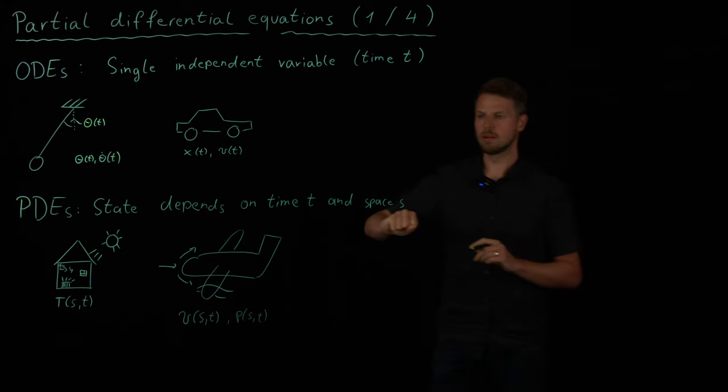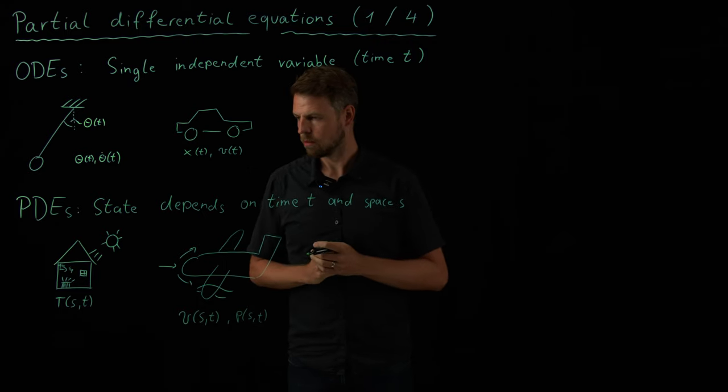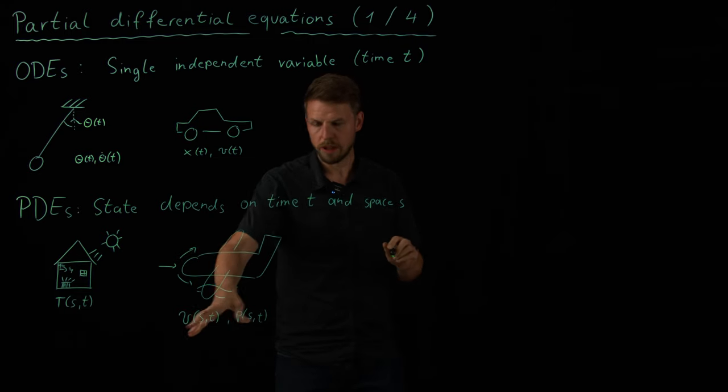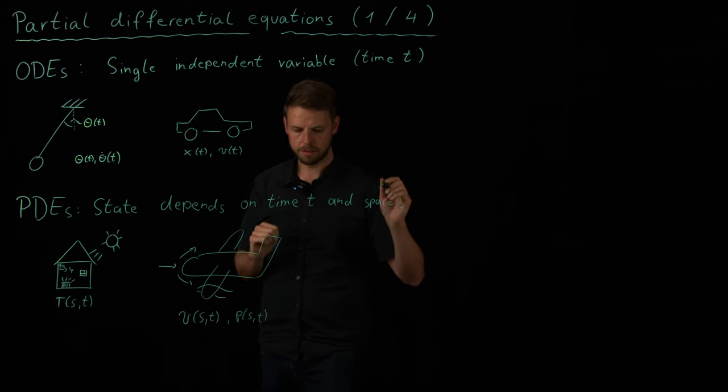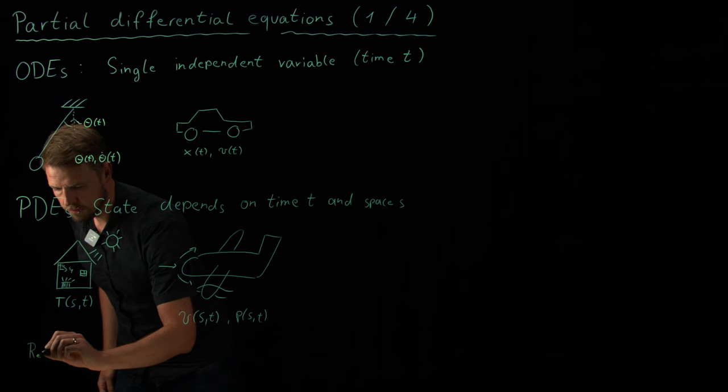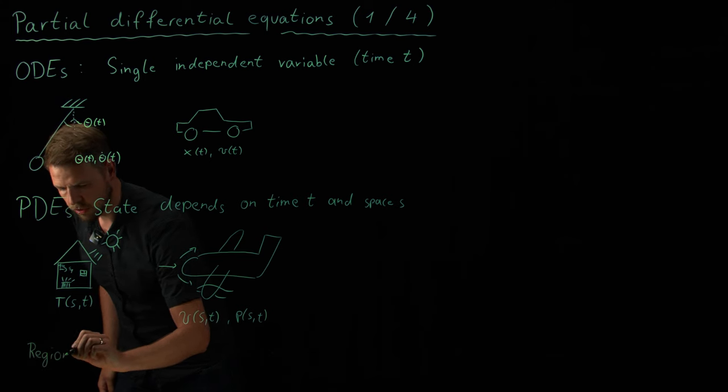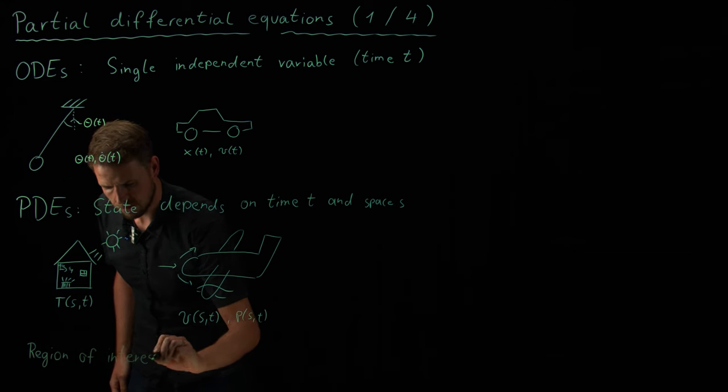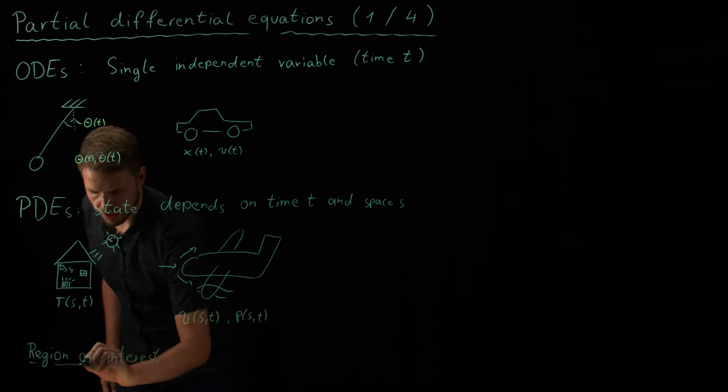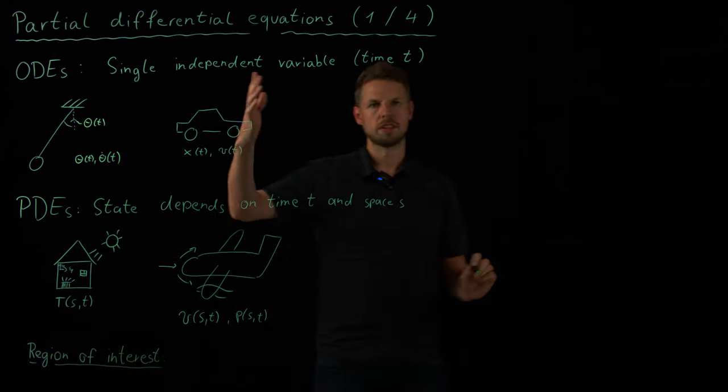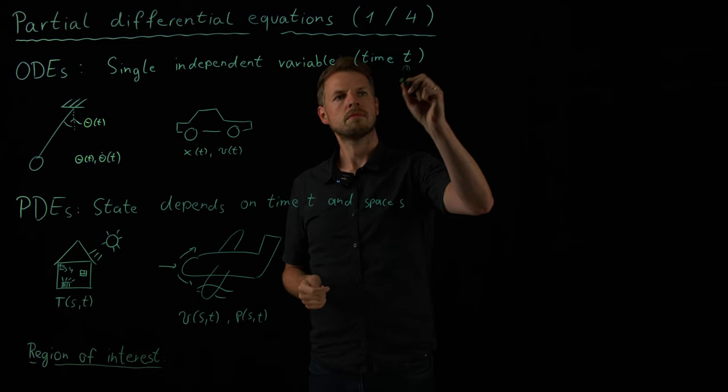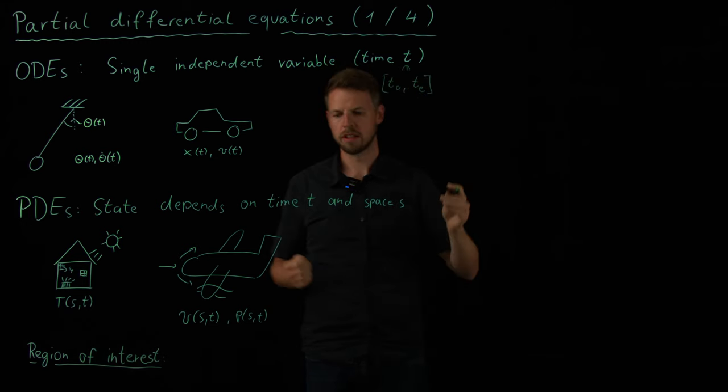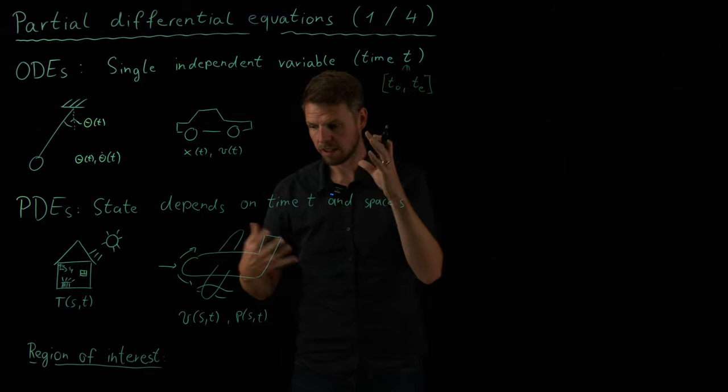So you see here two very prominent examples. We have these and we can talk a little bit more about other examples later on. But you see already, we have space and time dependency, which makes this a little bit more complicated. Because what we need to study, besides the time interval, is a region of interest or what we call the domain. Here for time dependent, we always said time is on the interval, maybe T0 to the end. Simply enough.